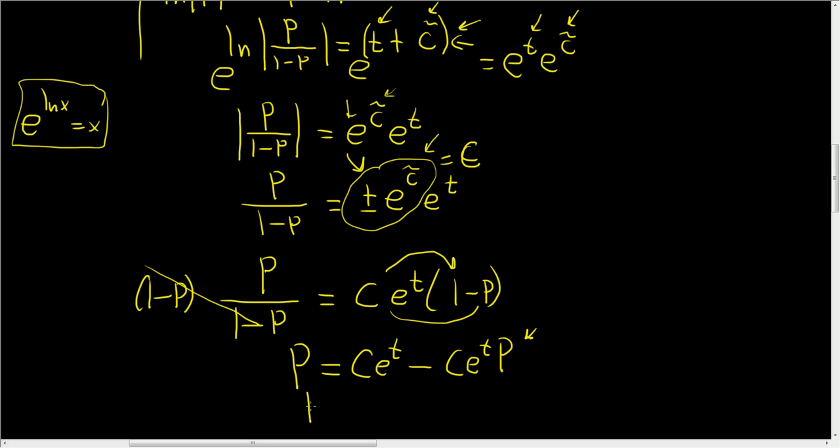If we add this to the other side, we end up with p plus c e to the t p equals c e to the t. We just added this to the other side so it became positive. And we wrote it on the left-hand side.